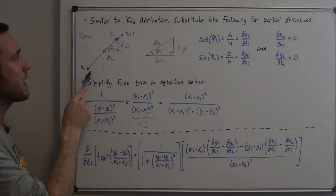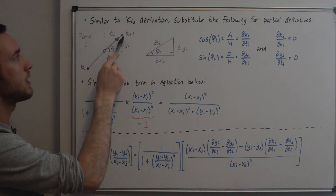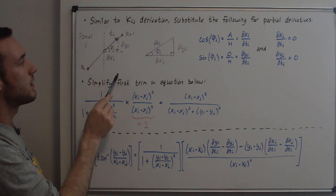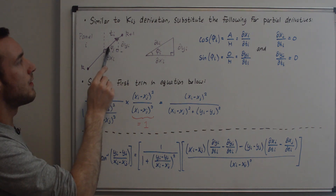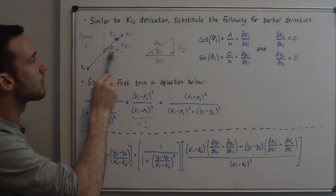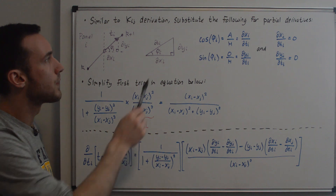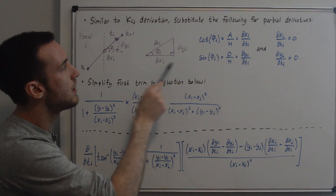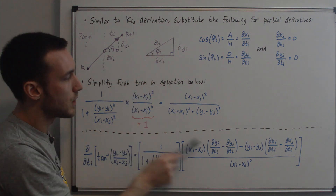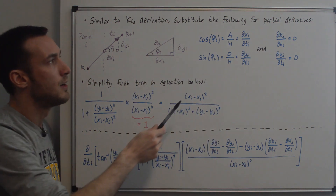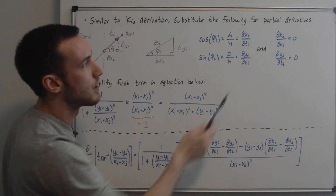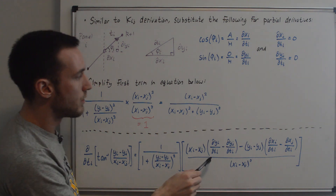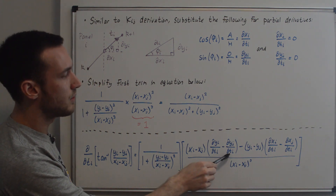We substitute in for the partial derivatives. For a single panel i going from point k to k+1, the tangential vector points along the panel, and we can draw a perpendicular showing dX_i and dY_i, with panel orientation angle phi_i. From this triangle: cos(phi_i) = dX_i/dT_i and sin(phi_i) = dY_i/dT_i. We substitute those in. Also, mixed partial derivatives where the subscripts differ are zero, so dX_j/dT_i = 0 and dY_j/dT_i = 0. We plug in sin(phi_i) and cos(phi_i) accordingly.